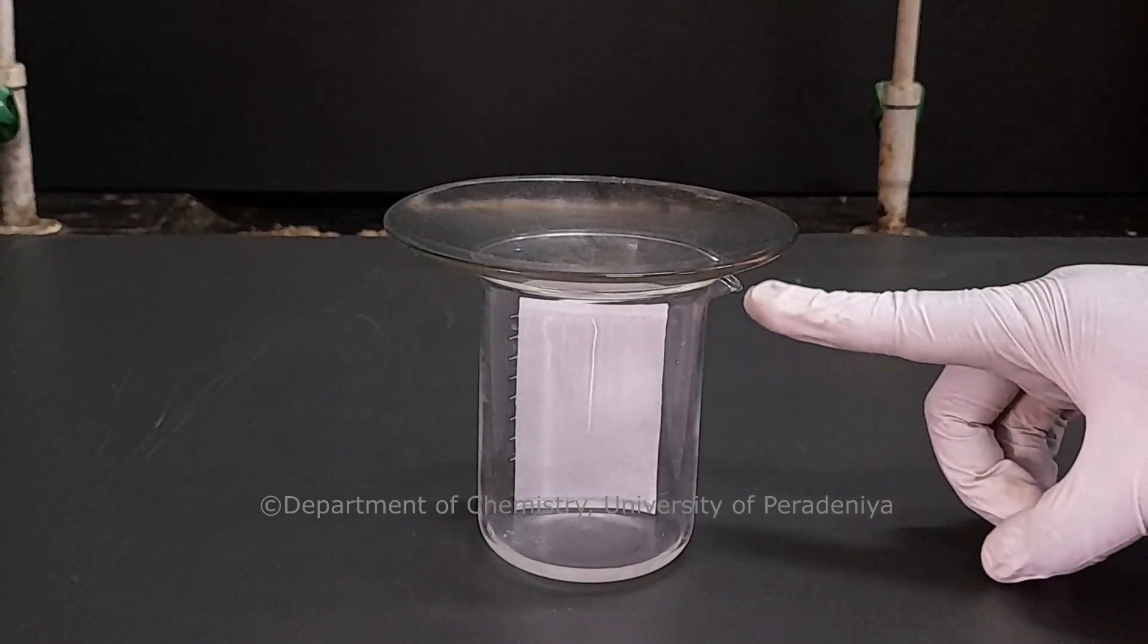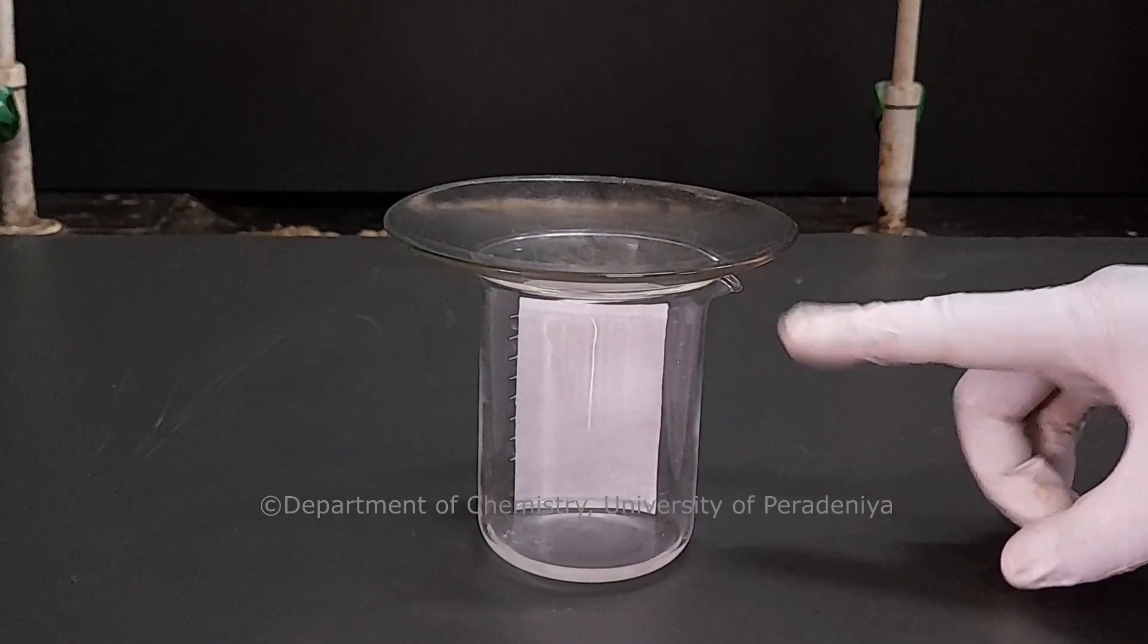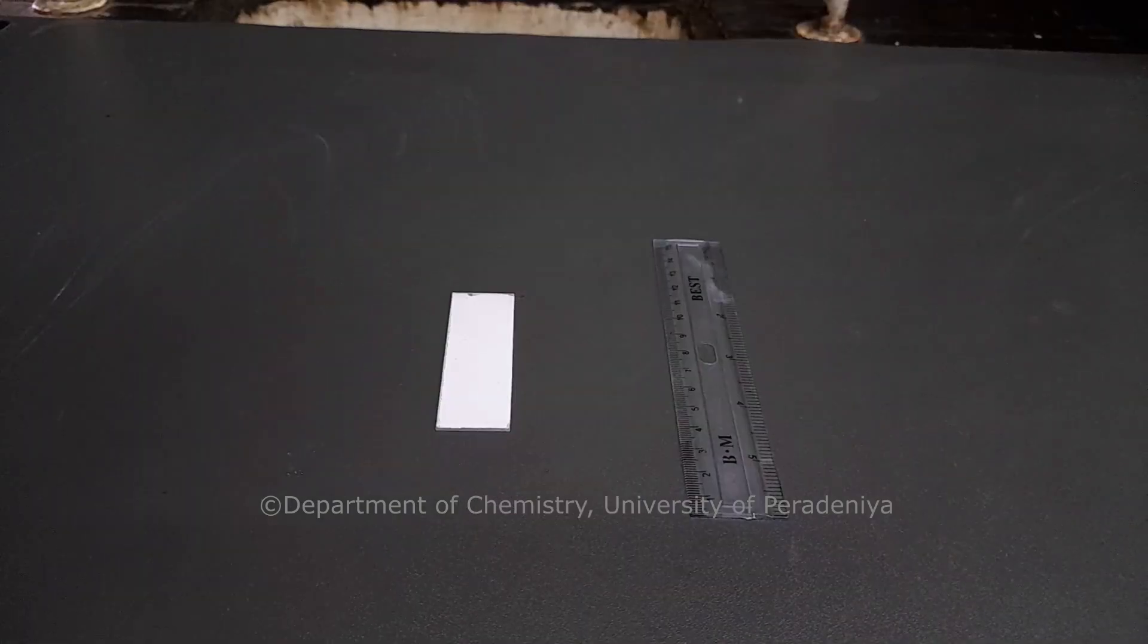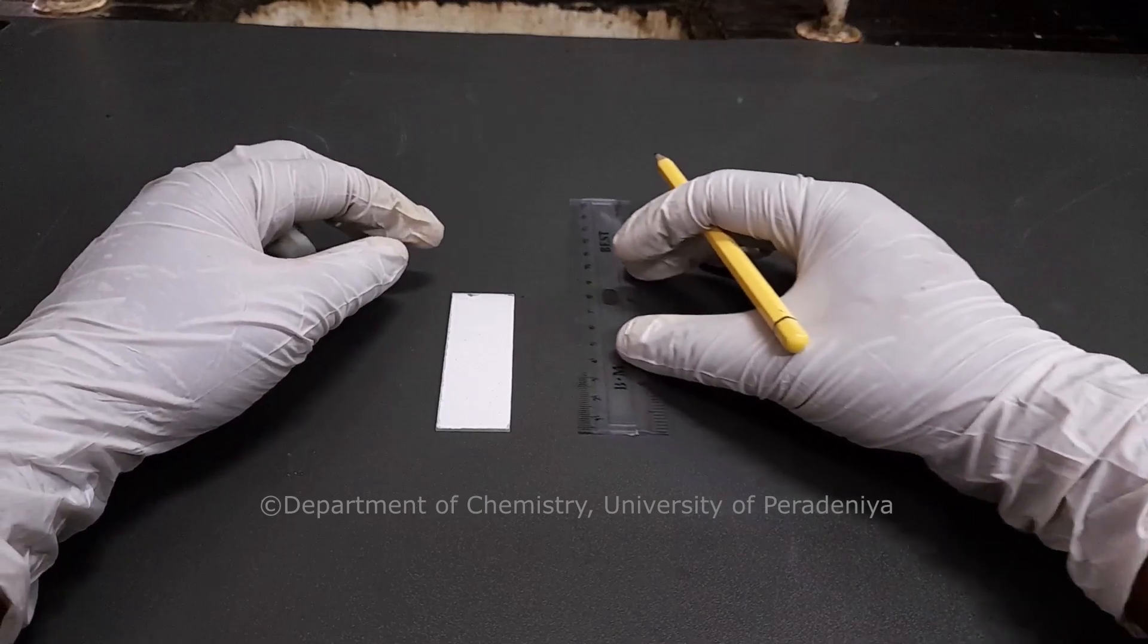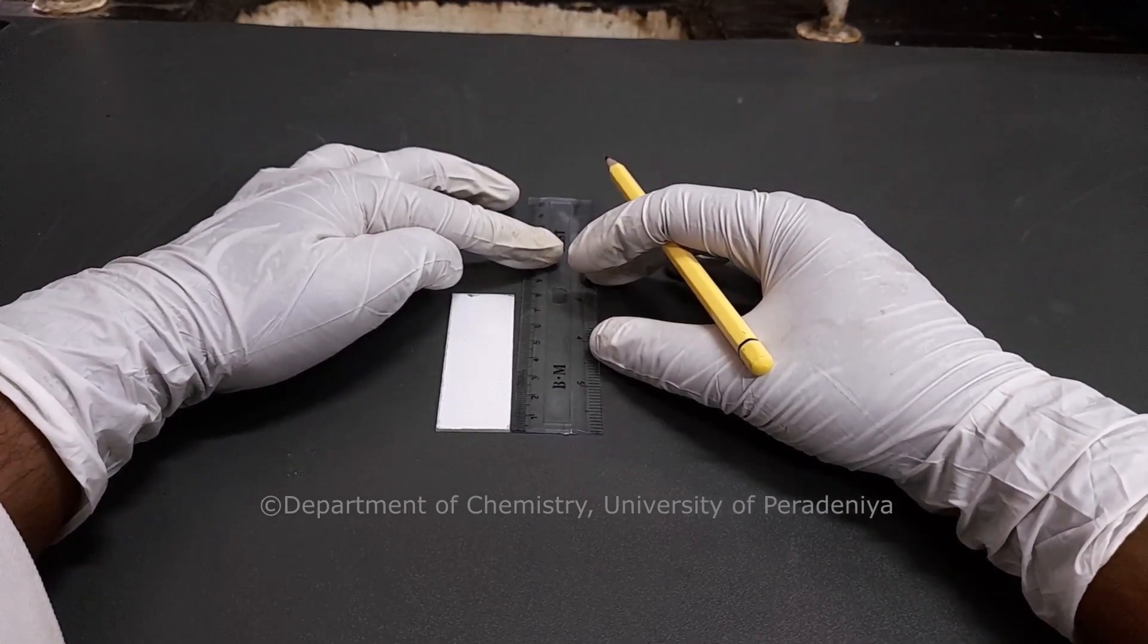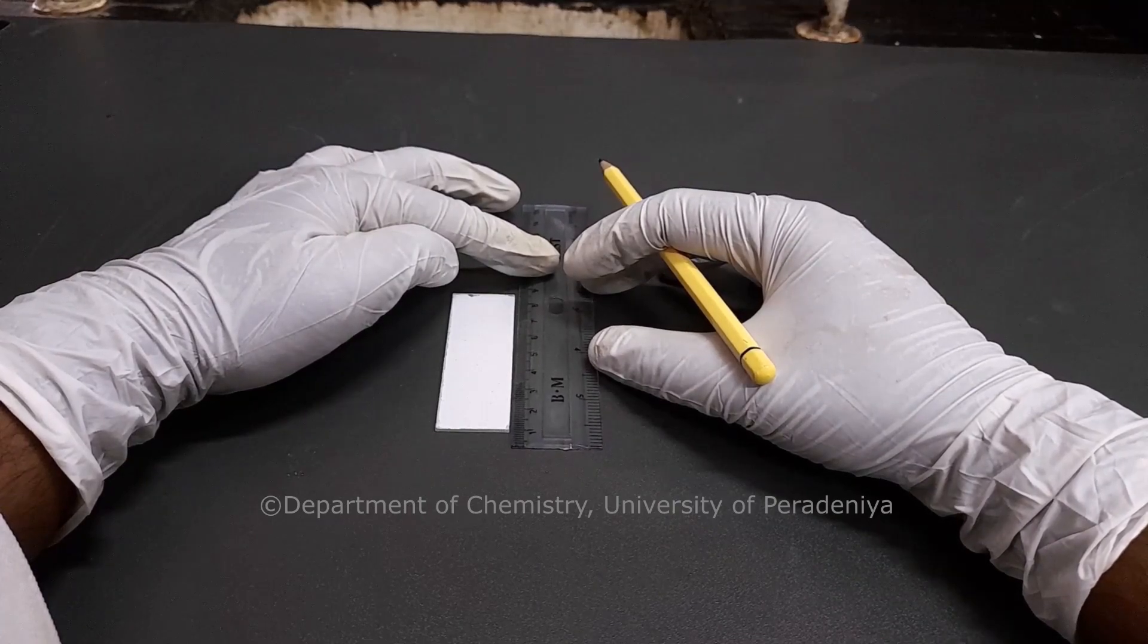Now the chamber is saturated. A ruler is used to mark the baseline and the solvent front on the TLC plate, or else a line can be drawn by using a pencil without damaging the plate.